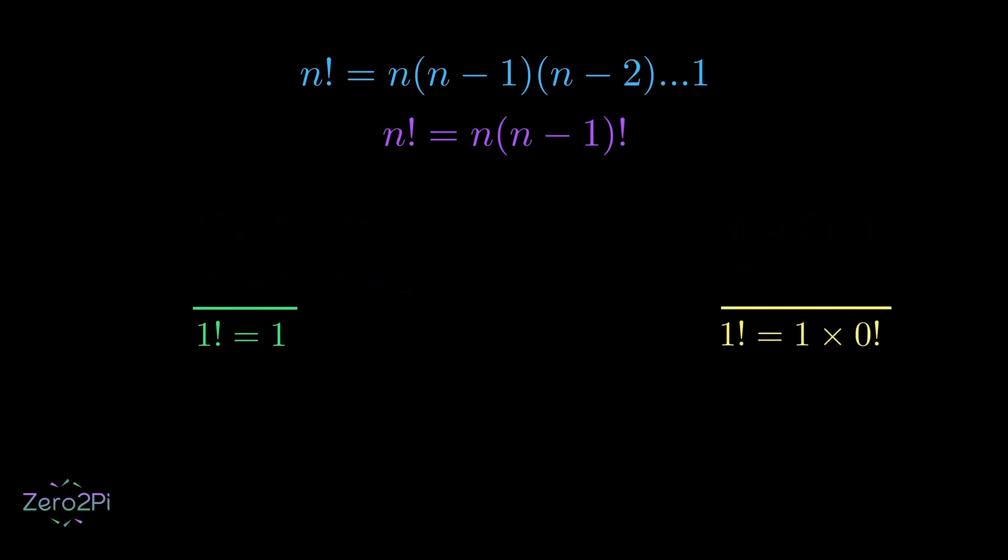Now, I want you to focus on these two equations. We know that 1 factorial is just 1. So, we can replace 1 factorial with 1. Notice that 0 factorial is being multiplied by 1.